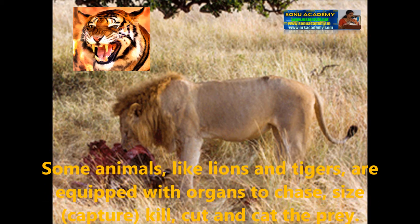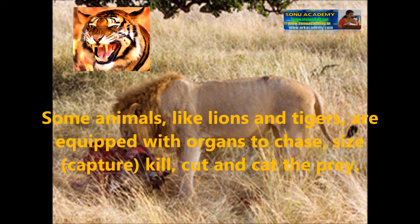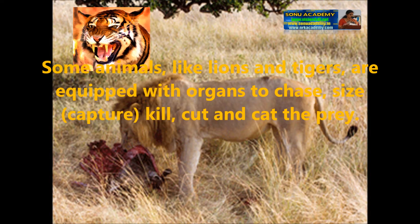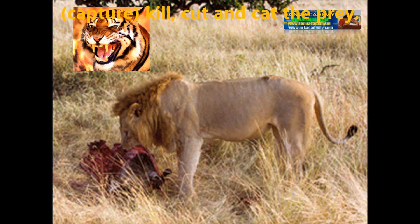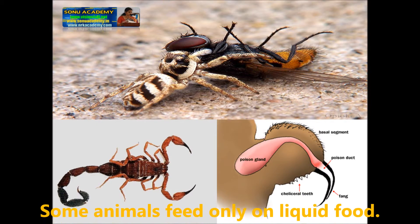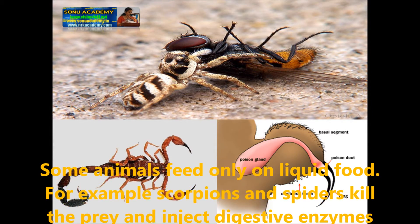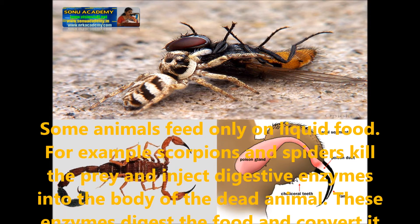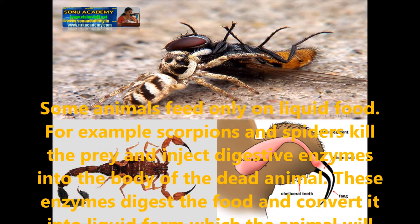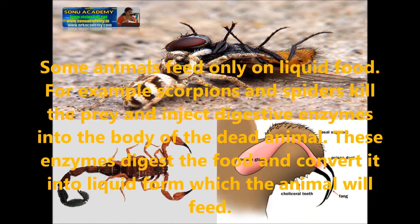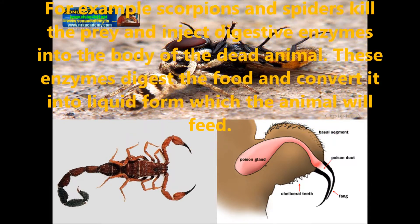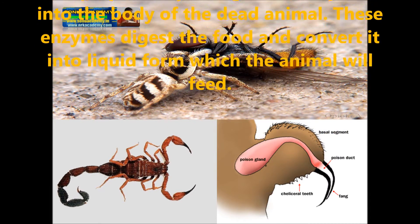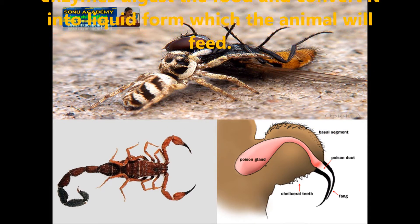Some animals like lions and tigers are equipped with organs to capture, kill, cut, and eat their prey. Some animals feed only on liquid food; for example, scorpions and spiders kill the prey and inject digestive enzymes into the body of the dead animal. These enzymes digest the food and convert it into liquid form, which the animal then feeds on.